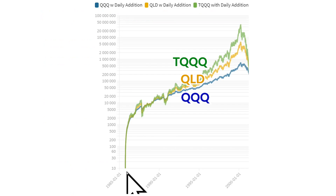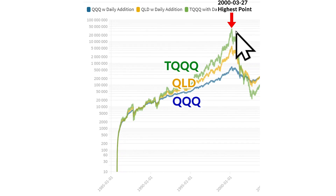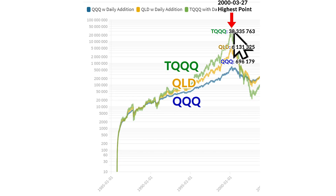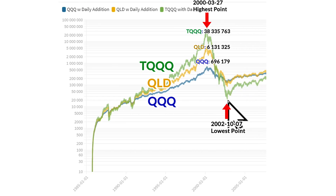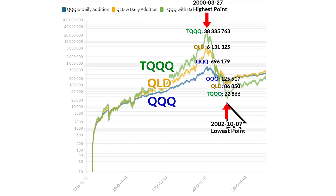This is the chart of QQQ, QLD, and TQQQ, assuming we had done dollar cost averaging, investing $10 from the beginning into these three funds. The highest points were in 2000: QQQ at $696,000, QLD at $6 million, and TQQQ at $38 million. The lowest point after the dot-com bubble crash in 2002 was: QQQ $125,000, QLD $86,000, TQQQ $22,000. TQQQ suffered a 99.9% drop even with dollar cost averaging.